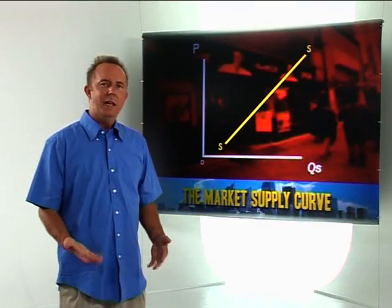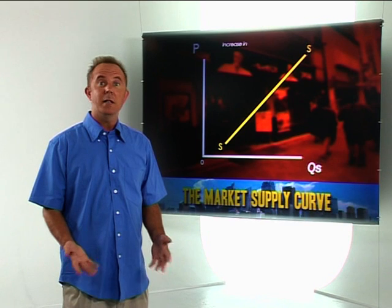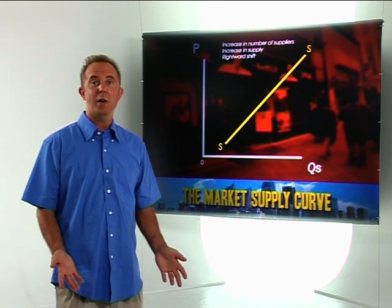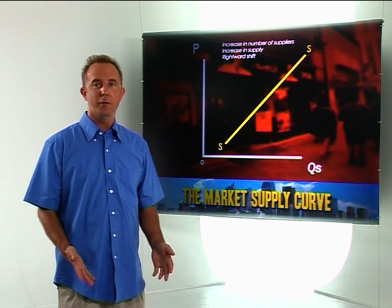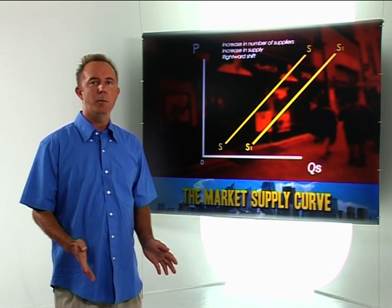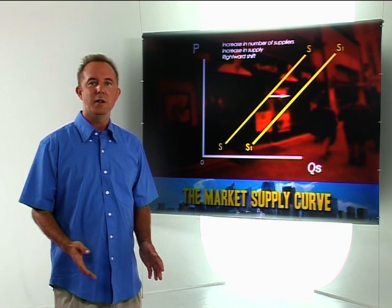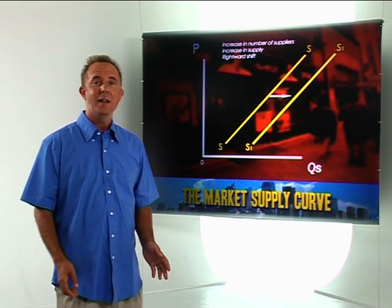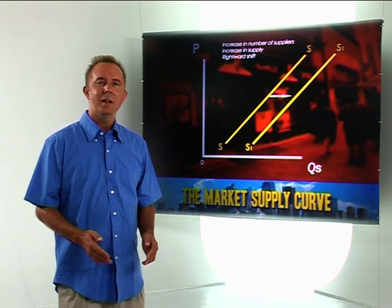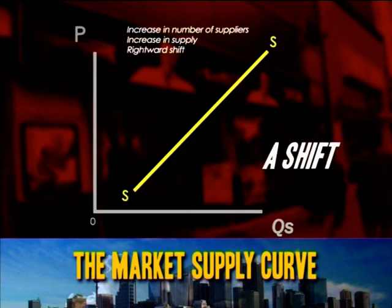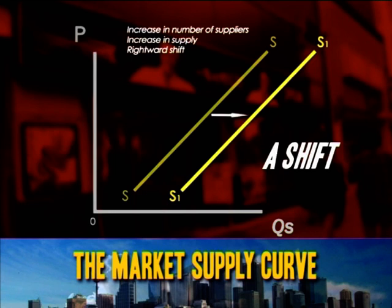Each supplier is still supplying the same quantity at each price, but because there are more of them, the overall market output increases, resulting in a shift of the supply curve. In this case, the supply curve shifts to the right. At each price, the market is now supplying more than before.